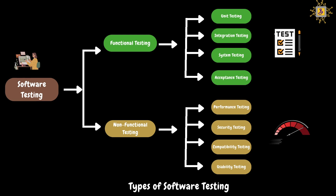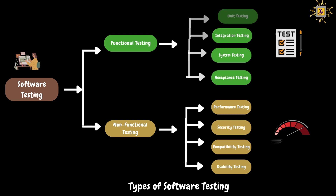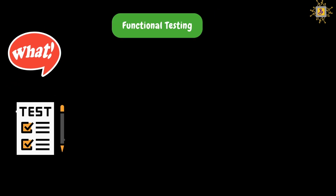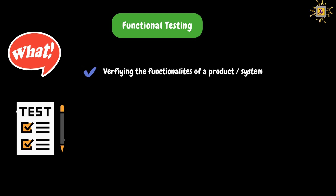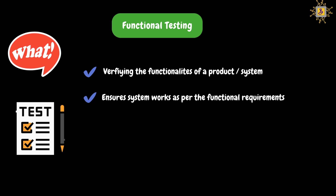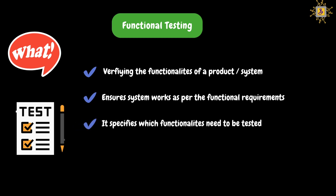Just to let you know that there are many types of testing, but I'm trying to make this series simple to help you understand the required concepts easily. Now, let's discuss functional testing concepts. Functional testing always tests what a product does — the testing focuses on the functionalities of the software or application. It will verify the functionalities and ensure the system works as per the given functional requirements. The functional teams will discuss with business teams to understand the software functional requirements.